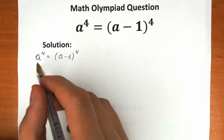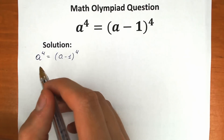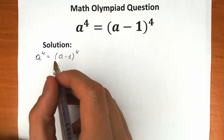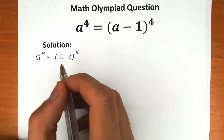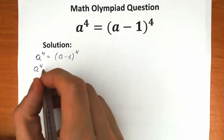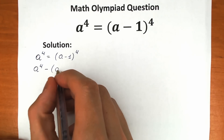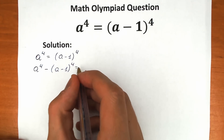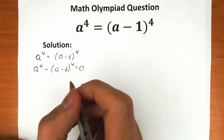Because we forget about roots — right here we have a fourth power, so we may have four roots. Let's look at this properly. First of all, let's bring the expression from the right hand side to the left hand side. So we have a to the fourth power minus (a minus one) to the fourth power equal to zero.